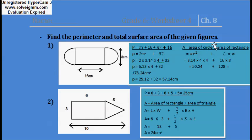Now for the area, you again have two figures here: the area of the circle plus the area of the rectangle. The area of the whole figure equals area of circle plus area of rectangle. Area of circle equals pi·r², and area of rectangle equals length times width.